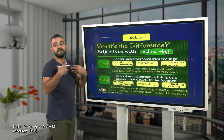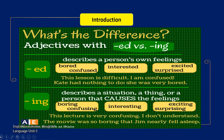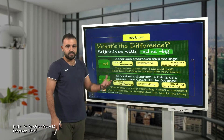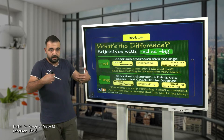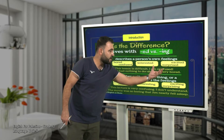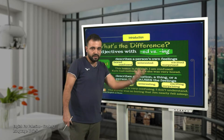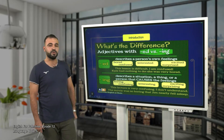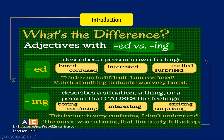The past participle forms of adjectives describe a person's own feelings — what do you feel? For example: bored, confused, interested, excited, surprised. This lesson is difficult, so what's the feeling I have? I am confused — I feel this state. Kate had nothing to do, so she was very bored, because she has nothing to do.